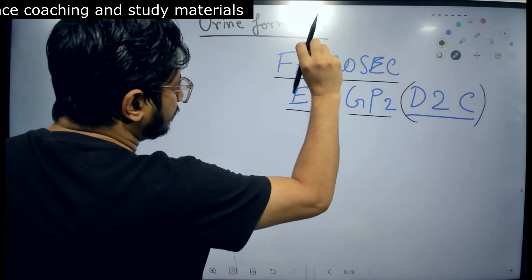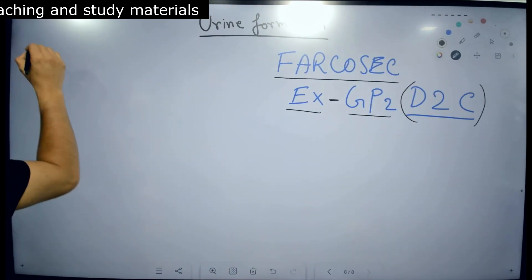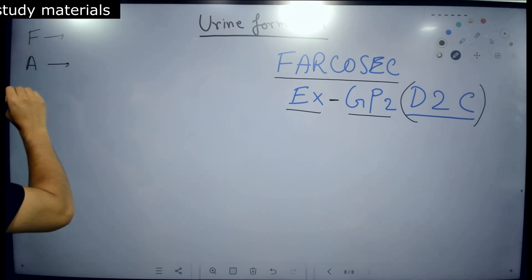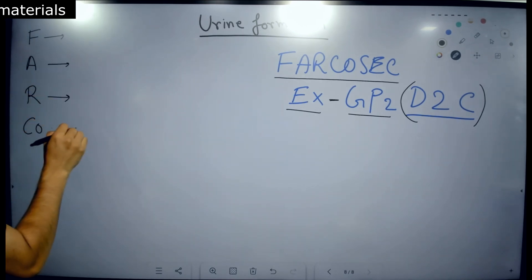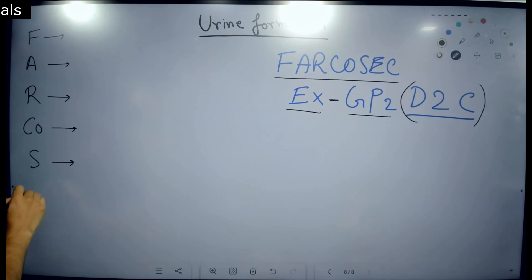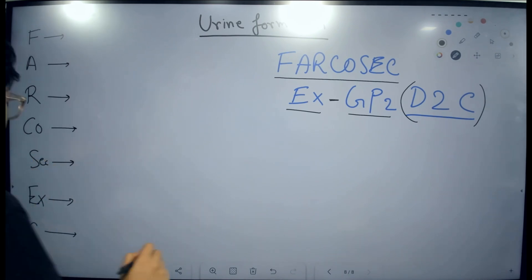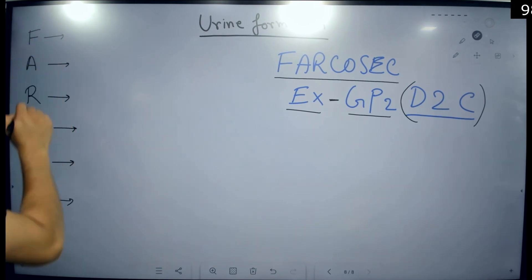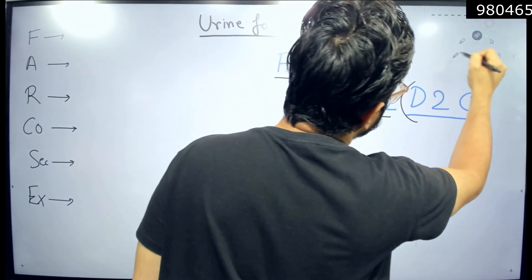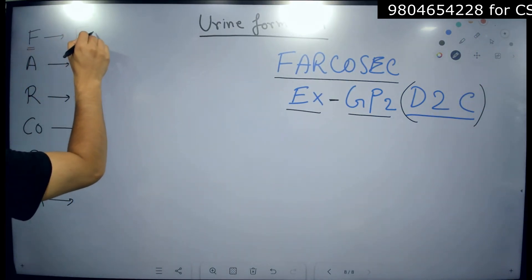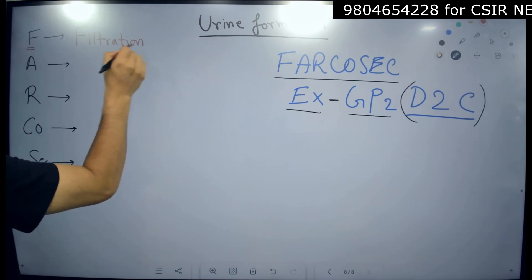Now we are going to take this mnemonic and break it down — first this segment, then the second segment. Starting with F, then A, then R — FAR — then CO together, then S, then E, then C — so it ends as FAR-COSEC, okay, this is how you can remember. Let me take a different colour — the red one to explain. F, or FAR, stands for filtration — the very first step.